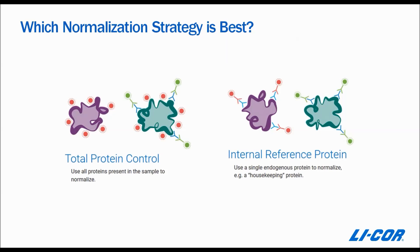Which normalization strategy is best for your experimental conditions? You have options. You can either use a total protein control, such as Revert, or you can use housekeeping proteins for normalization.